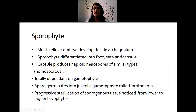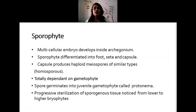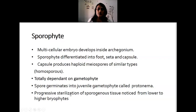The sporophyte is differentiated into seta and capsule. The capsule produces haploid meiospores of similar types — spores of one type, hence they are called homospores. The sporophyte is attached to and totally dependent on the gametophyte. Spores are produced within the sporophyte by reduction division. The sporophyte ruptures and spores are liberated, germinating into a young gametophyte called protonema. This protonema further gives rise to rhizoids and the thallus, producing an adult gametophyte.